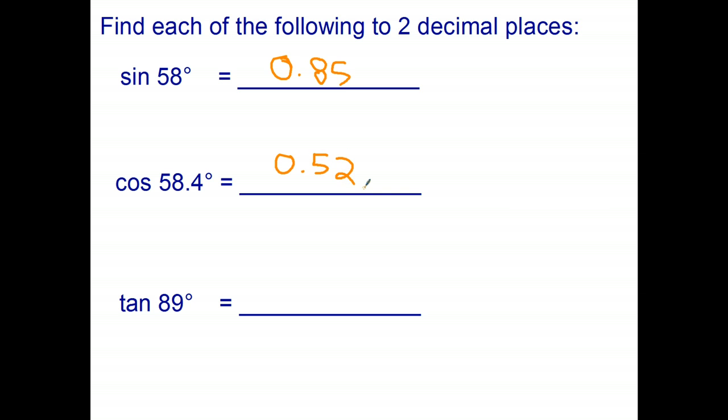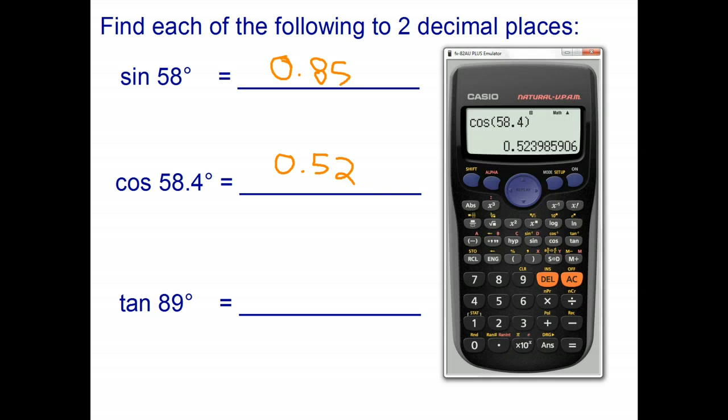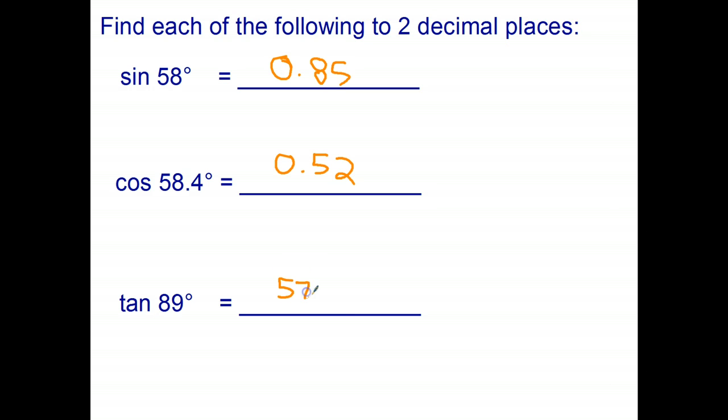And the last one tangent of 89 is 57.289 so 57.29 when I round it off. A little side question: Why is the tangent so big? I'll leave it up to you to have a think about.